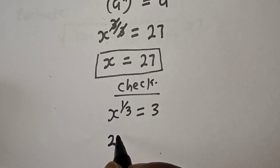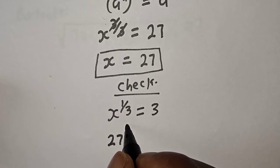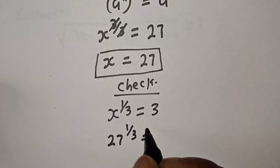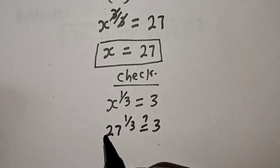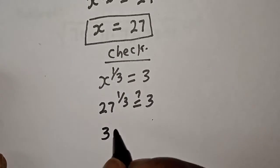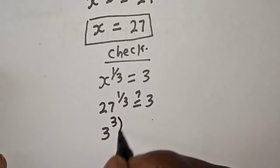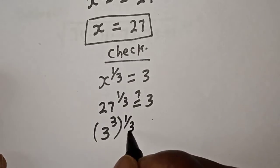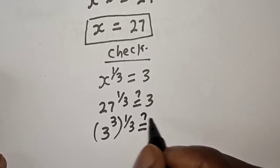We have 27 raised to power 1 over 3 must be equal to 3. Then 27 is 3 raised to power 3 to the power of 1 over 3 must be equal to 3.